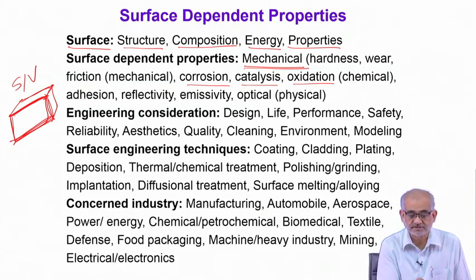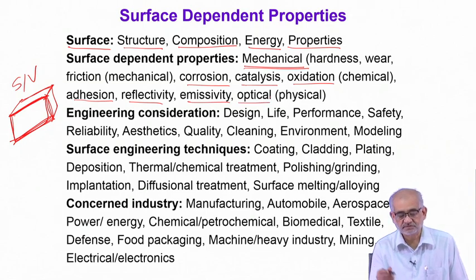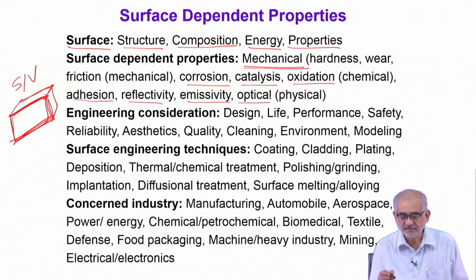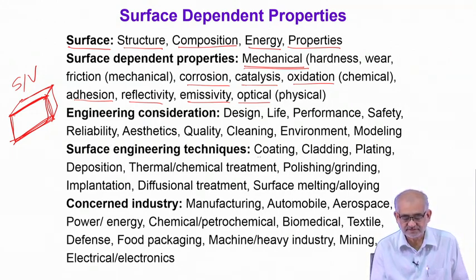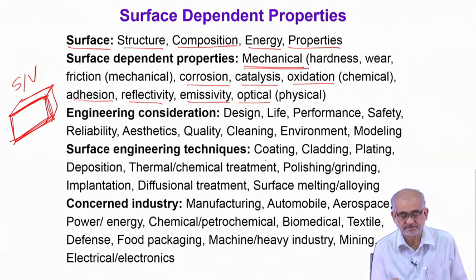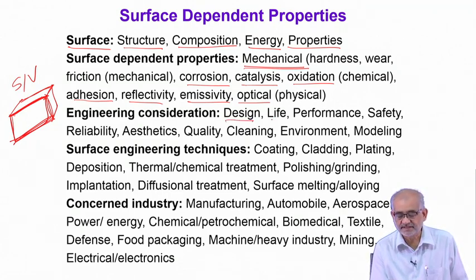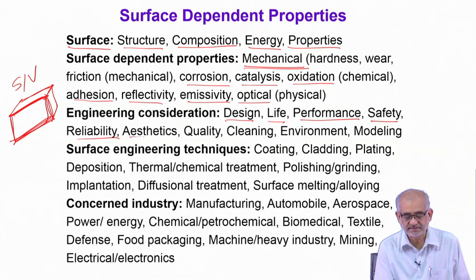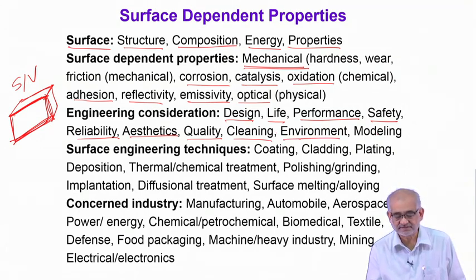We are also concerned with various physical properties like adhesion, reflectivity, emissivity, optical emission properties, and simply the aesthetics or appearance of the surface — effects of color and so on. Surfaces are important for various engineering considerations, whether design, life prediction, assessment, performance properties, safety of the component, reliability, aesthetics, appearance, quality, cleanliness, environmental interaction, and modeling exercises.